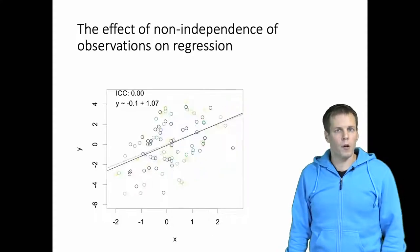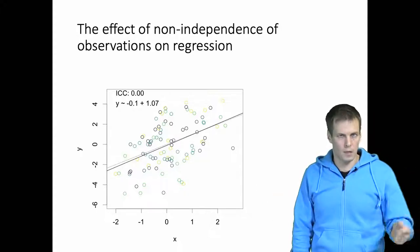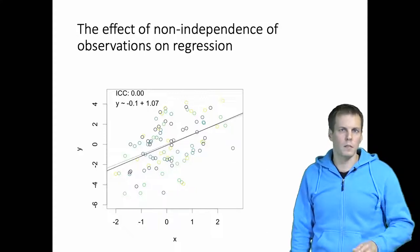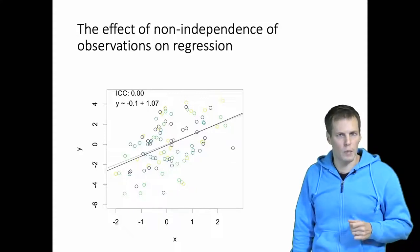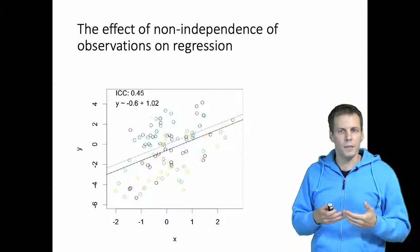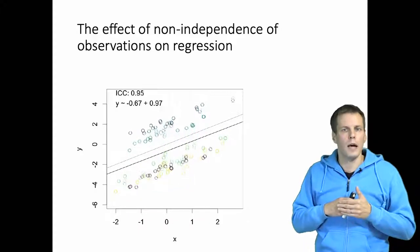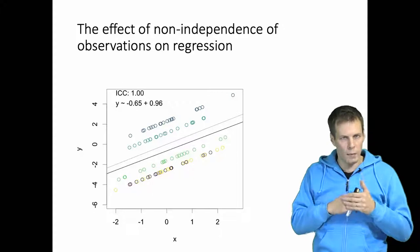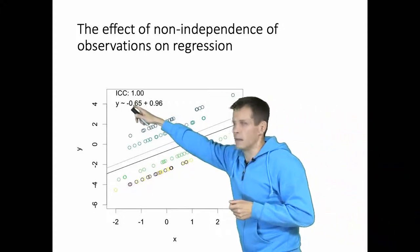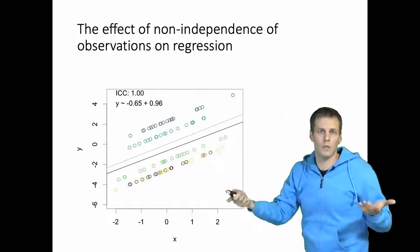What if X is not clustered but the error term is clustered? This would be quite an unusual case, but it's useful to understand what happens. When we cluster the error term, we effectively reduce the variation or unique values in the error term. The implication is that the intercept will be estimated less precisely, but the slope estimate will stay about the same.